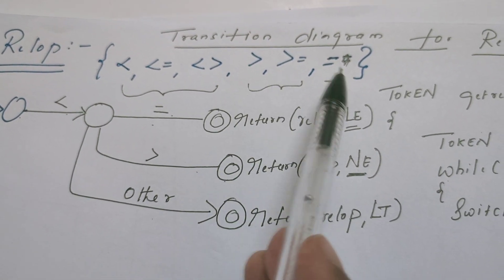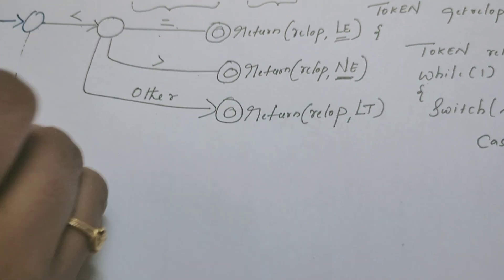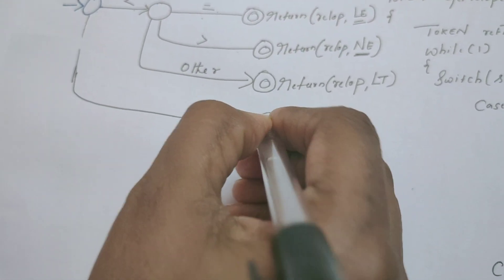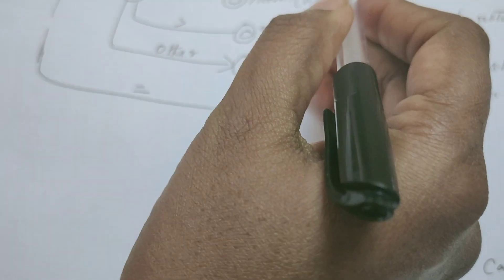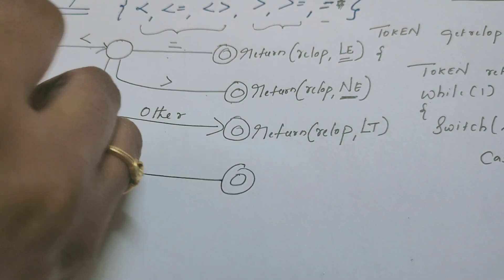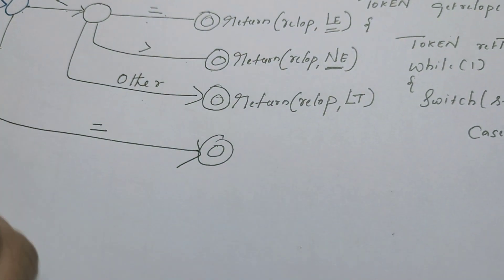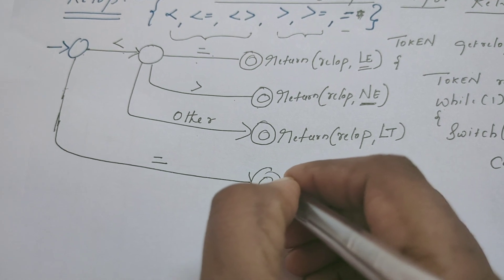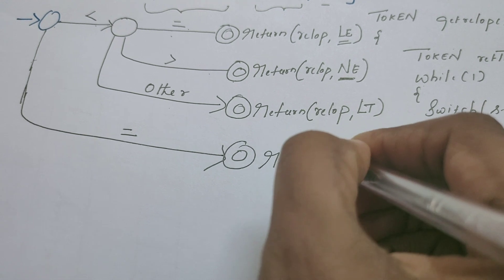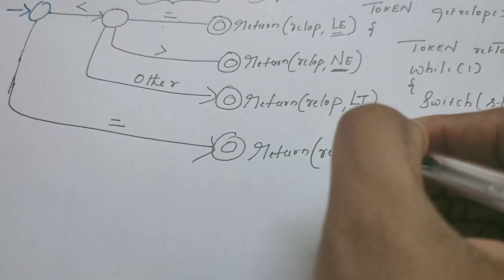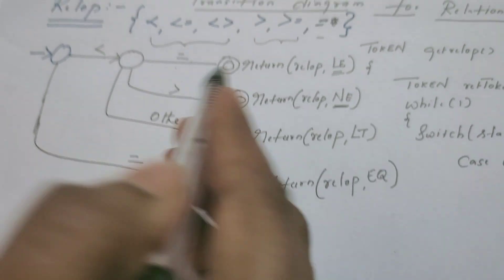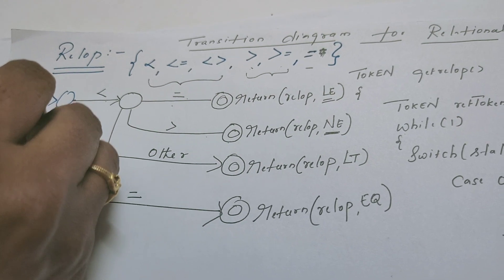We have defined three operators: less than or equal to, not equal to, and less than. Now let us define the transitions for the rest of the symbols. From the start state, we allow the machine to read the equal to symbol because it is separate — it is not preceded or followed by any other symbol. From the start state, if it reads the equal to symbol, it reaches a state that returns the token with name relational operator and value EQ, which refers to equal to.